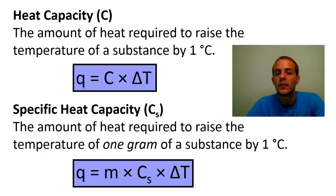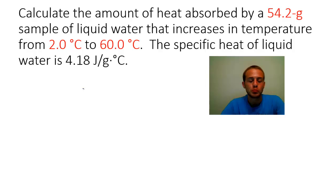And so before we end the video let's just do one example where we use this equation. So this problem says to calculate the amount of heat that's absorbed by a 54.2 gram sample of liquid water that increases its temperature from 2.0 degrees Celsius to 60.0 degrees Celsius. And it also says that the specific heat of liquid water is 4.18 joules over grams times degrees Celsius. So again we're going to use that formula q equals m Cs delta T, and we're simply going to plug in all of our values.